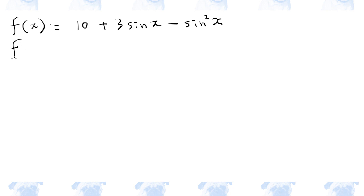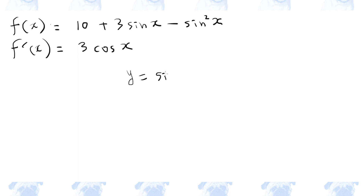So let's find f dash. The constant term disappears, and the derivative of sine x is cosine x. Now, how do we differentiate sine x squared? Let y be equal to sine x squared, and let u be equal to sine x. Then y is equal to u squared.